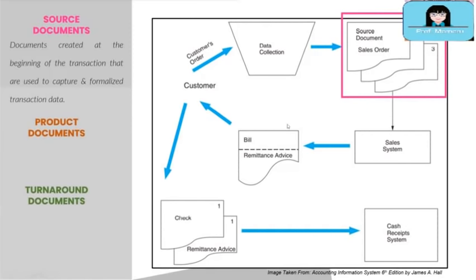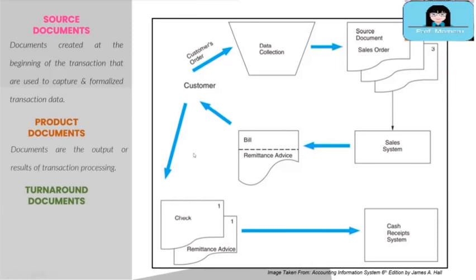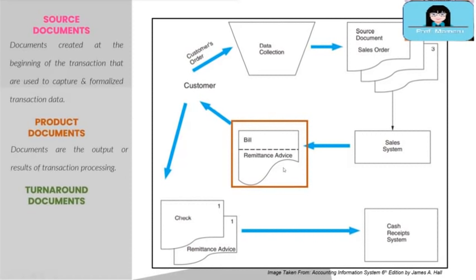Next are product documents, which are the output or results of transaction processing. In the diagram, the sales orders are sent to the sales system. After processing of the sales orders and receipt of the customers' orders, an invoice or billing statement with remittance advice is sent to the customer. The billing statement together with the remittance advice is the product document of the sales system.